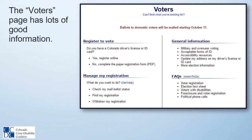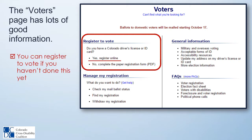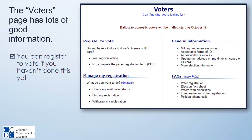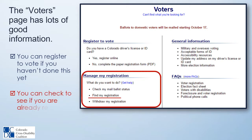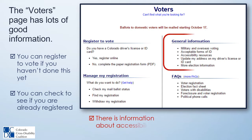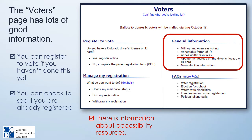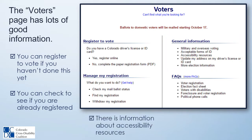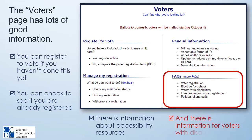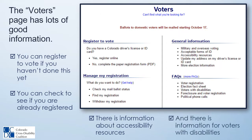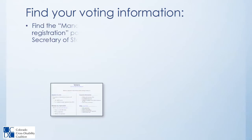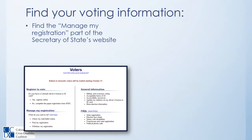Now click on the Voters link. The Voters page has lots of good information. You can register to vote if you haven't done this yet. You can check to see if you are already registered. There is information about accessibility resources and information for voters with disabilities. Find your voting information by going to the Manage My Registration part of the Secretary of State's website.